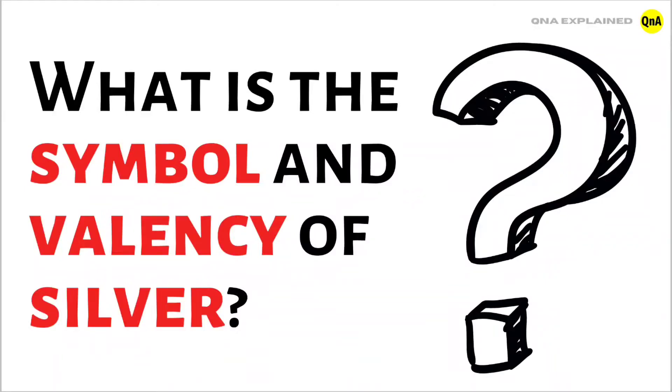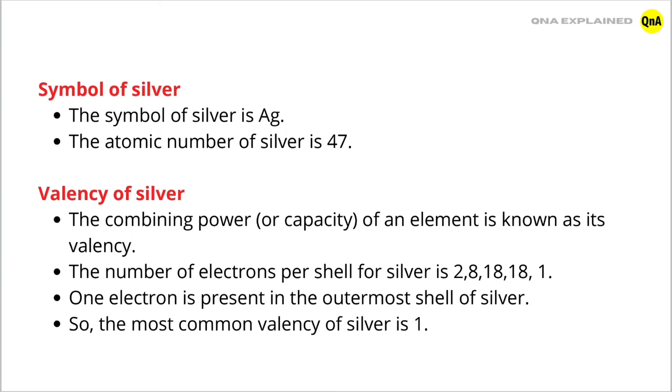What is the symbol and valency of silver? The symbol of silver is Ag. The atomic number of silver is 47.